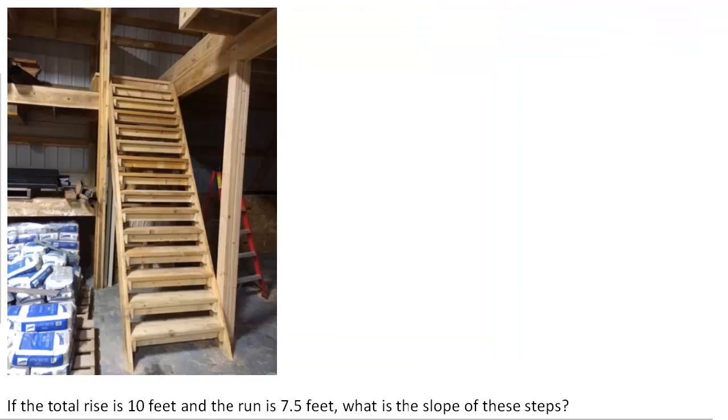Here's a second example. If the total rise of this staircase is 10 feet and its run is 7.5 feet, what is its slope? Again, slope is rise over run, we're rising 10 feet, we are running 7.5 feet.